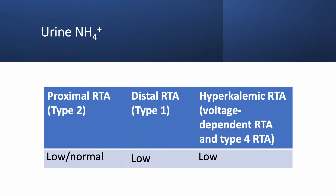What about urine ammonium? In proximal RTA, it is low or normal — usually normal — because the problem is with bicarbonate reabsorption, not ammonium production. In distal RTA and hyperkalemic RTA, urine ammonium is low because you have low ammonium production. So the only type where you may have normal ammonium excretion is proximal RTA.